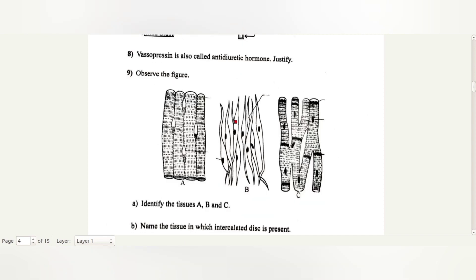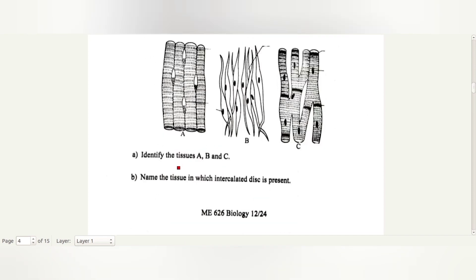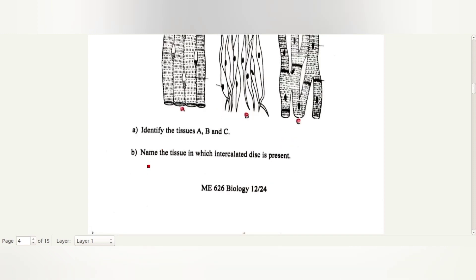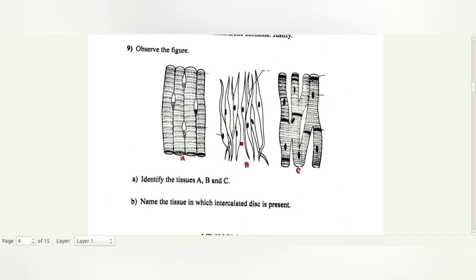Observe the figure. Identify the tissue A, B, C. A is skeletal muscle, B is smooth muscle, C is cardiac muscle. Name the tissue in which intercalated disc is present. Intercalated discs are present in cardiac muscle.